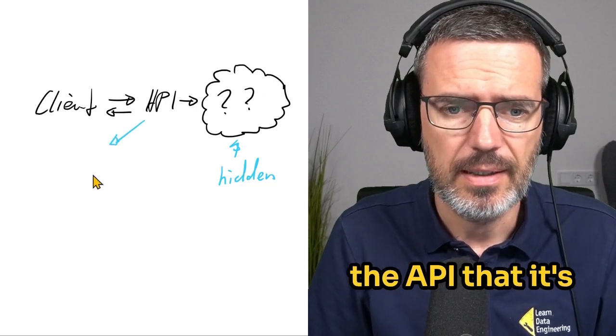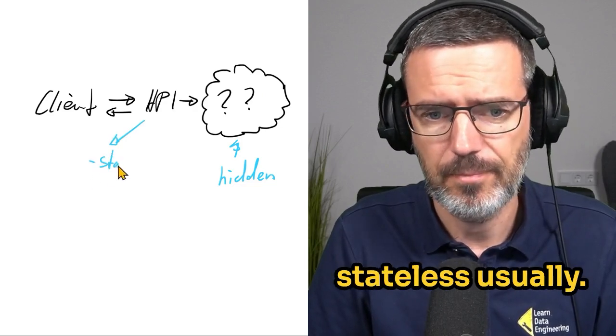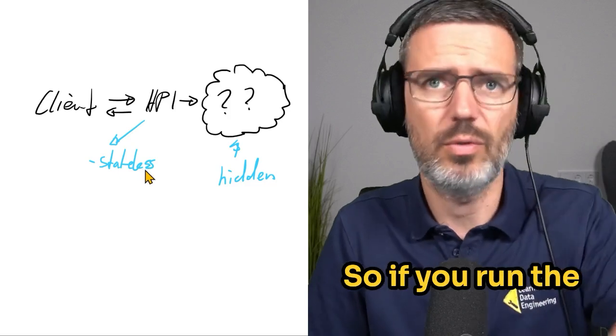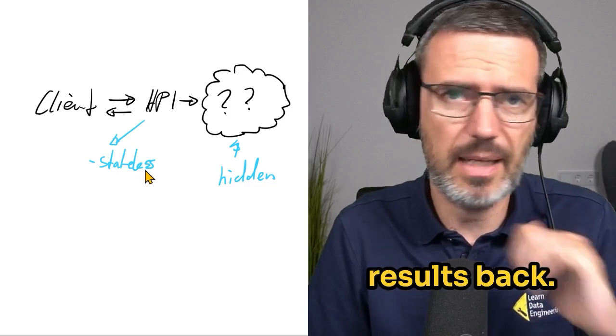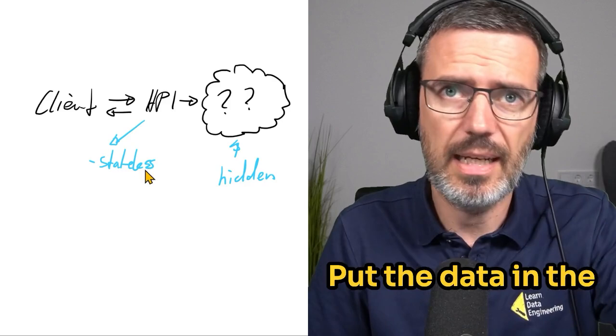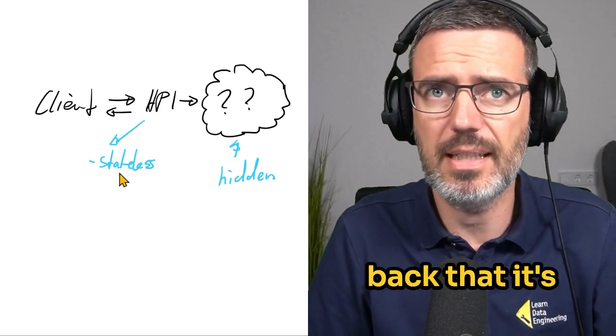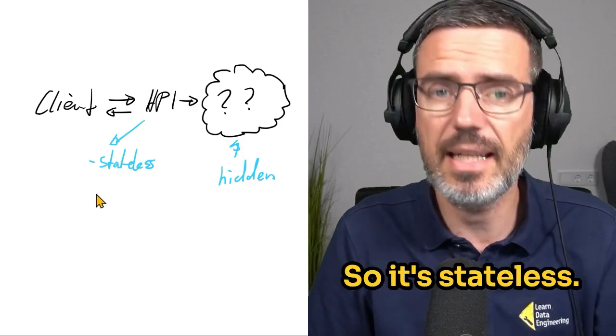And the good thing with the API is that it's stateless usually. So if you run the GET, you get the results back. That's it. If you run a PUT, put the data in the database and get the information back that it's been stored. Done. So it's stateless.